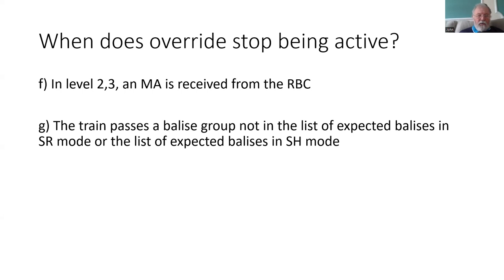Some features added after the initial design of ETCS include the ability to send a list of Balises that the train is expected to pass over in SR or in SH. If the train reads one of those Balise groups not in that list, that would normally generate a trip if in SR or SH, but the override stops that happening. But as soon as you read that first unexpected Balise group, override finishes.